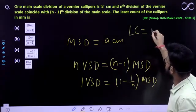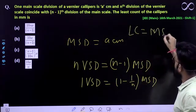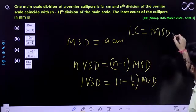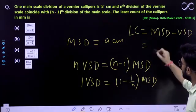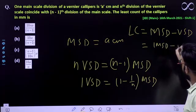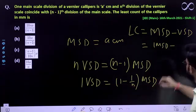Now, what is the least count? Least count is MSD minus VSD. Let's express VSD in terms of MSD.